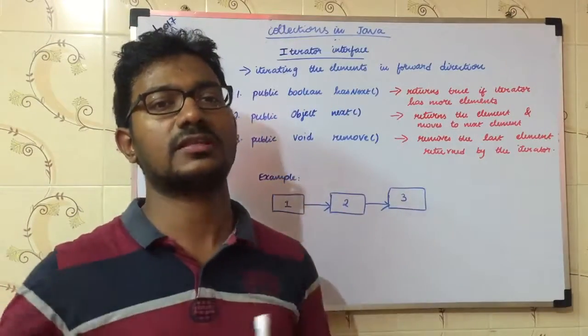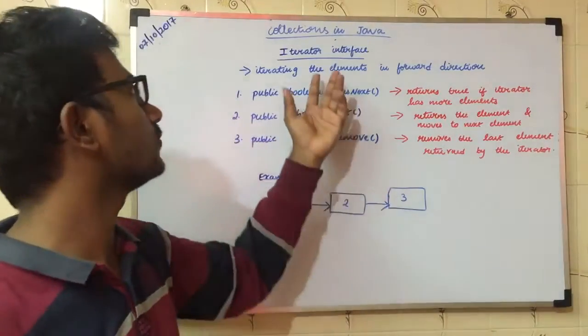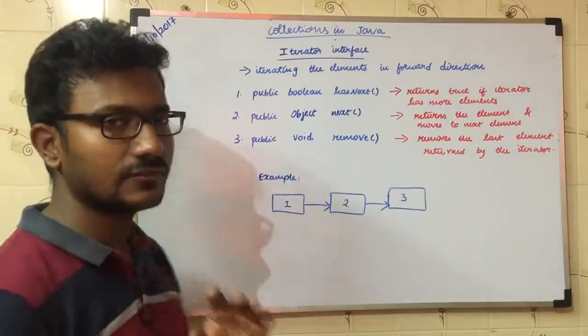If you have a data collection, you can move through the data structure. You can use the Iterator interface. The Iterator interface is just an interface.